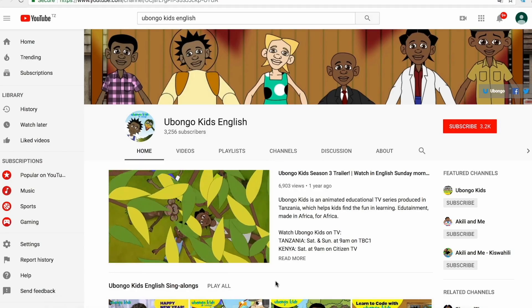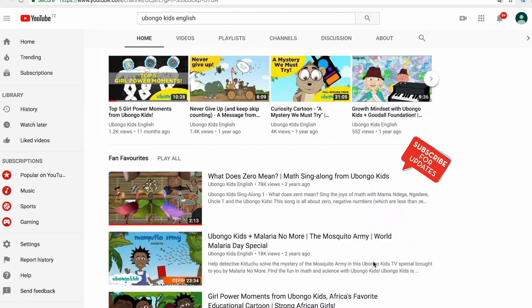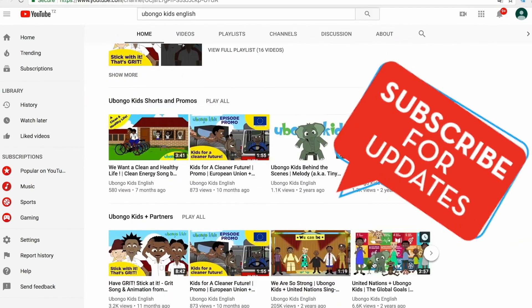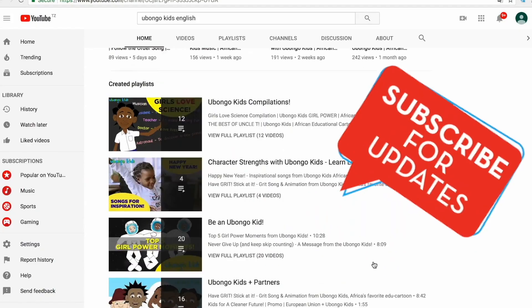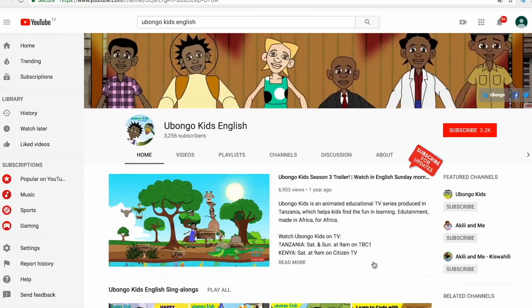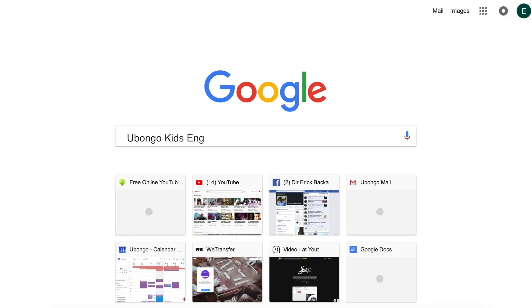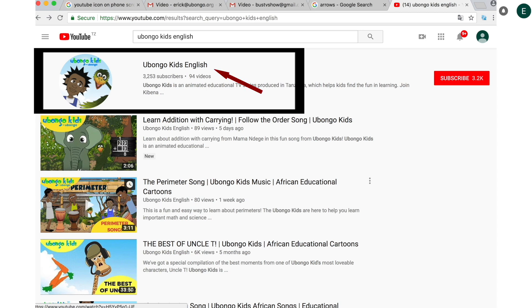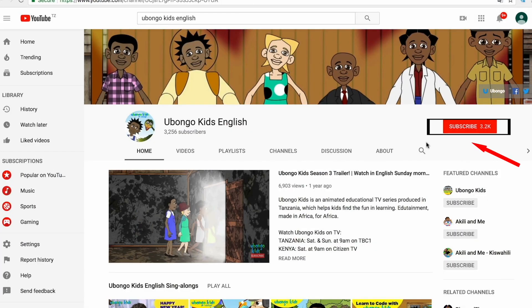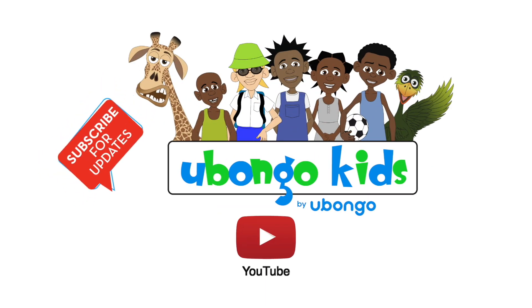Never miss out on new Ubongo Kids videos ever again. Subscribe today and become the first to know every time new fun educational content is available. Simply type Ubongo Kids English on the search bar. Click on the Ubongo Kids English channel page. Click subscribe on the right-hand corner of your screen. What are you waiting for? You are three easy steps away from joining the Ubongo Kids family.